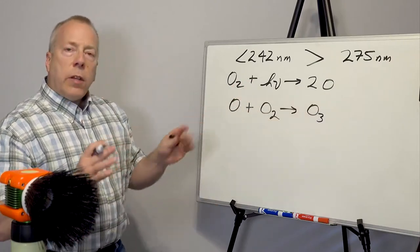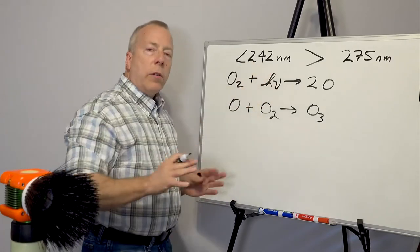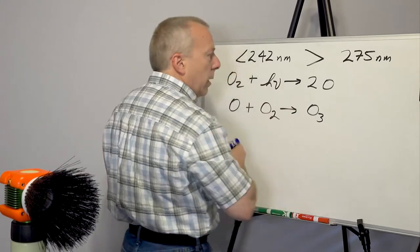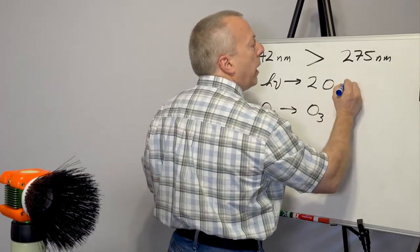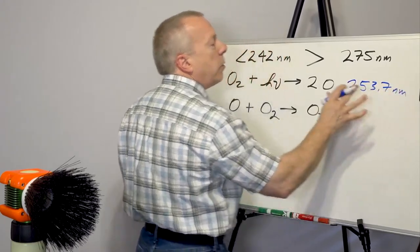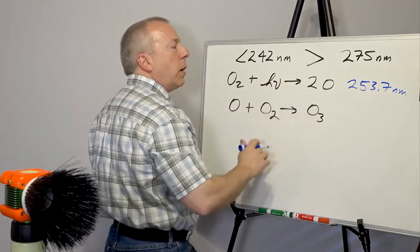So that's interesting. Other UVC lights on the market, for instance, a mercury vapor lamp is at 253.7 nanometers. It's also greater than 242, so it would not generate ozone.